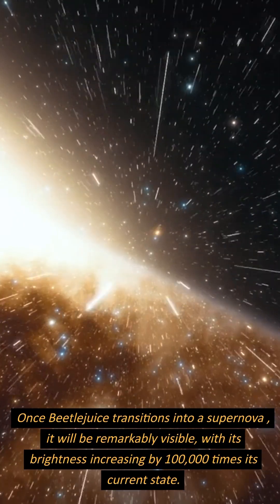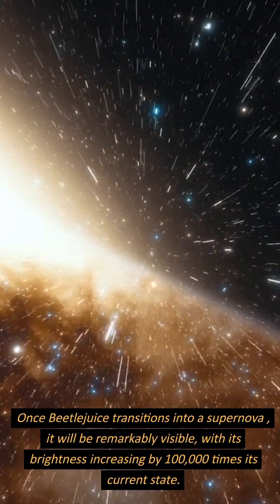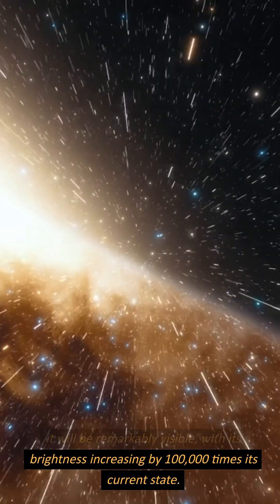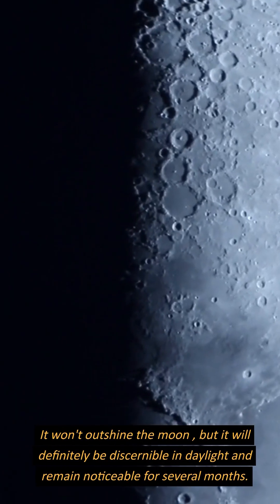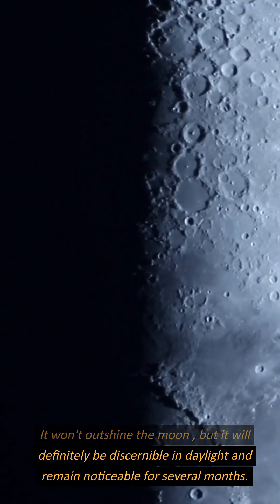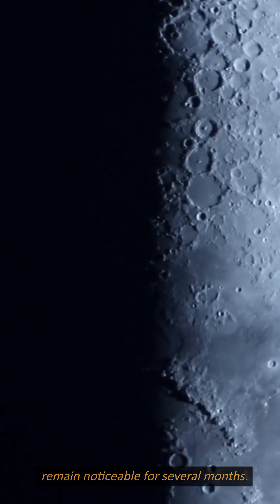Once Betelgeuse transitions into a supernova, it will be remarkably visible, with its brightness increasing by 100,000 times its current state. It won't outshine the moon, but it will definitely be discernible in daylight and remain noticeable for several months.